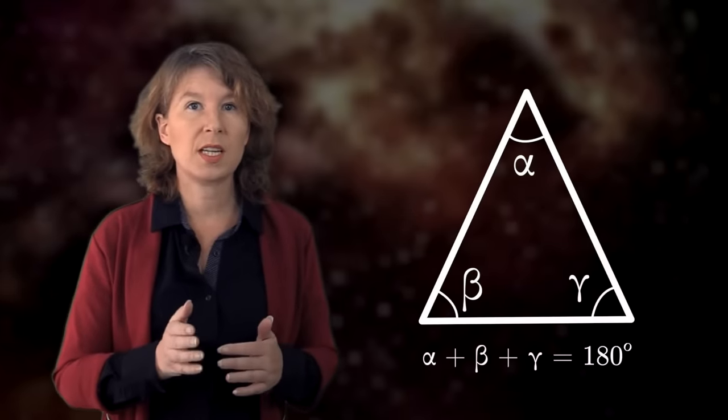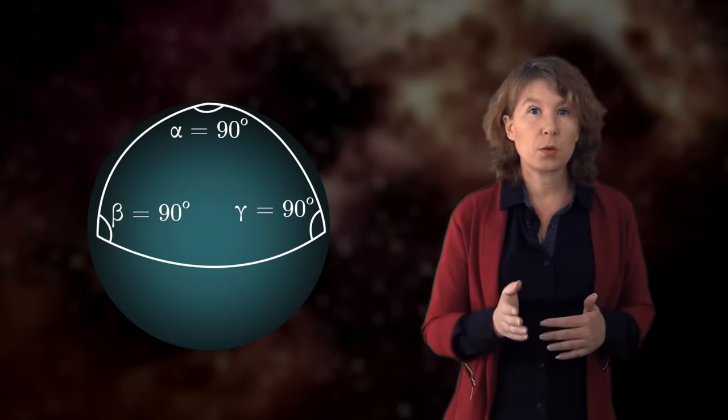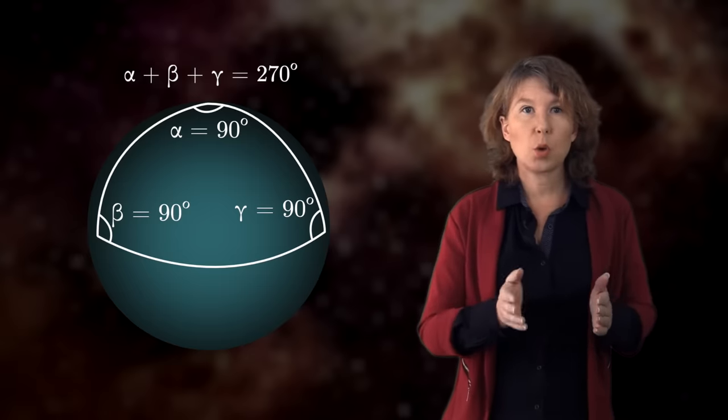So for the sphere, that'd mean we'd have to ask how we can find out it's curved if we were living on the surface, maybe ants crawling around on it. One way to do it is to remember that in flat space the inner angles of triangles always sum up to 180 degrees. In a curved space, that's no longer the case. An extreme example is to take a triangle that has a right angle at one of the poles of the sphere, goes down to the equator, and closes along the equator. This triangle has three right angles. They sum to 270 degrees. That just isn't possible in flat space. So if the ant measures all these triangles, it can figure out that it's crawling on a sphere.